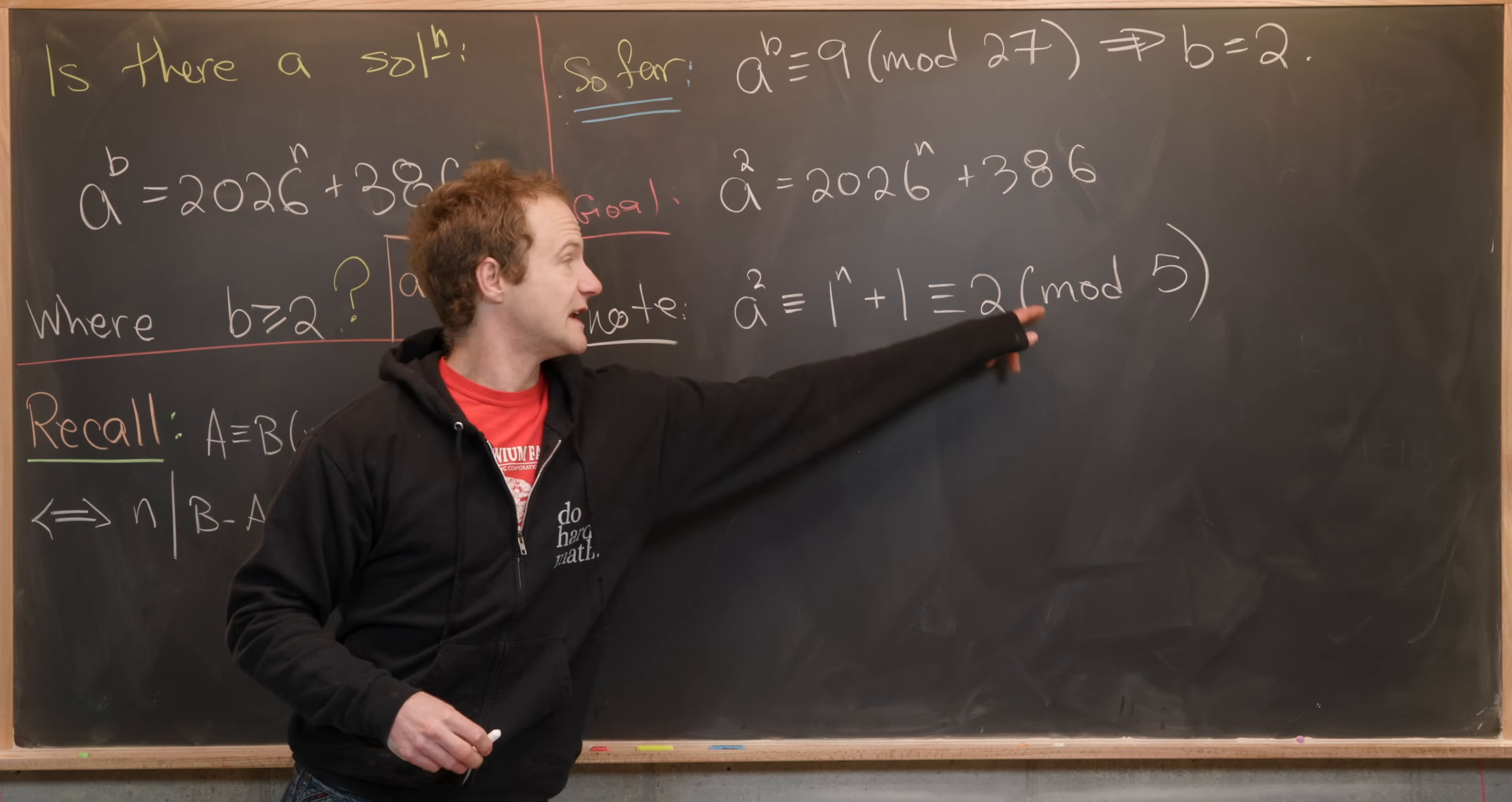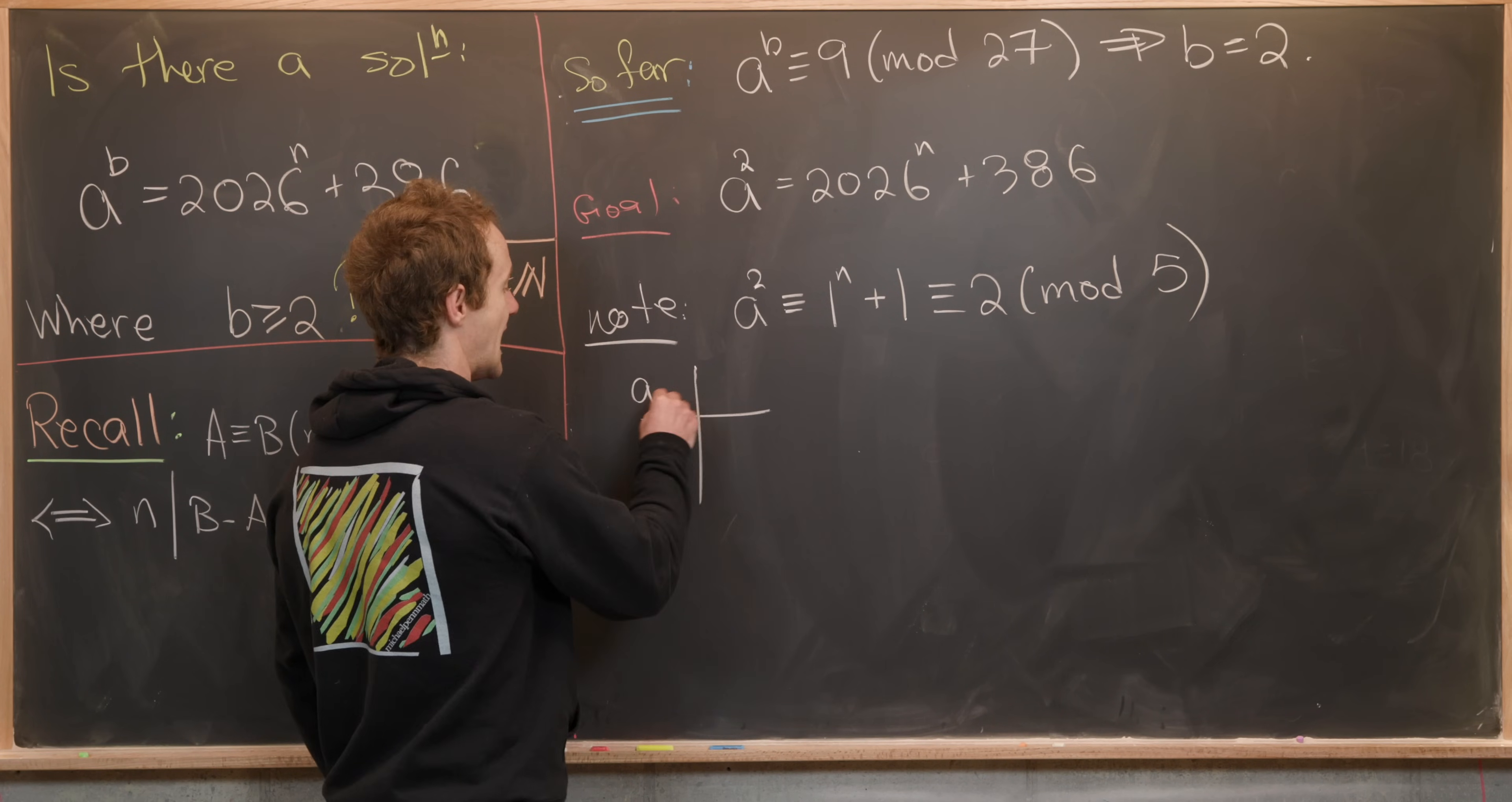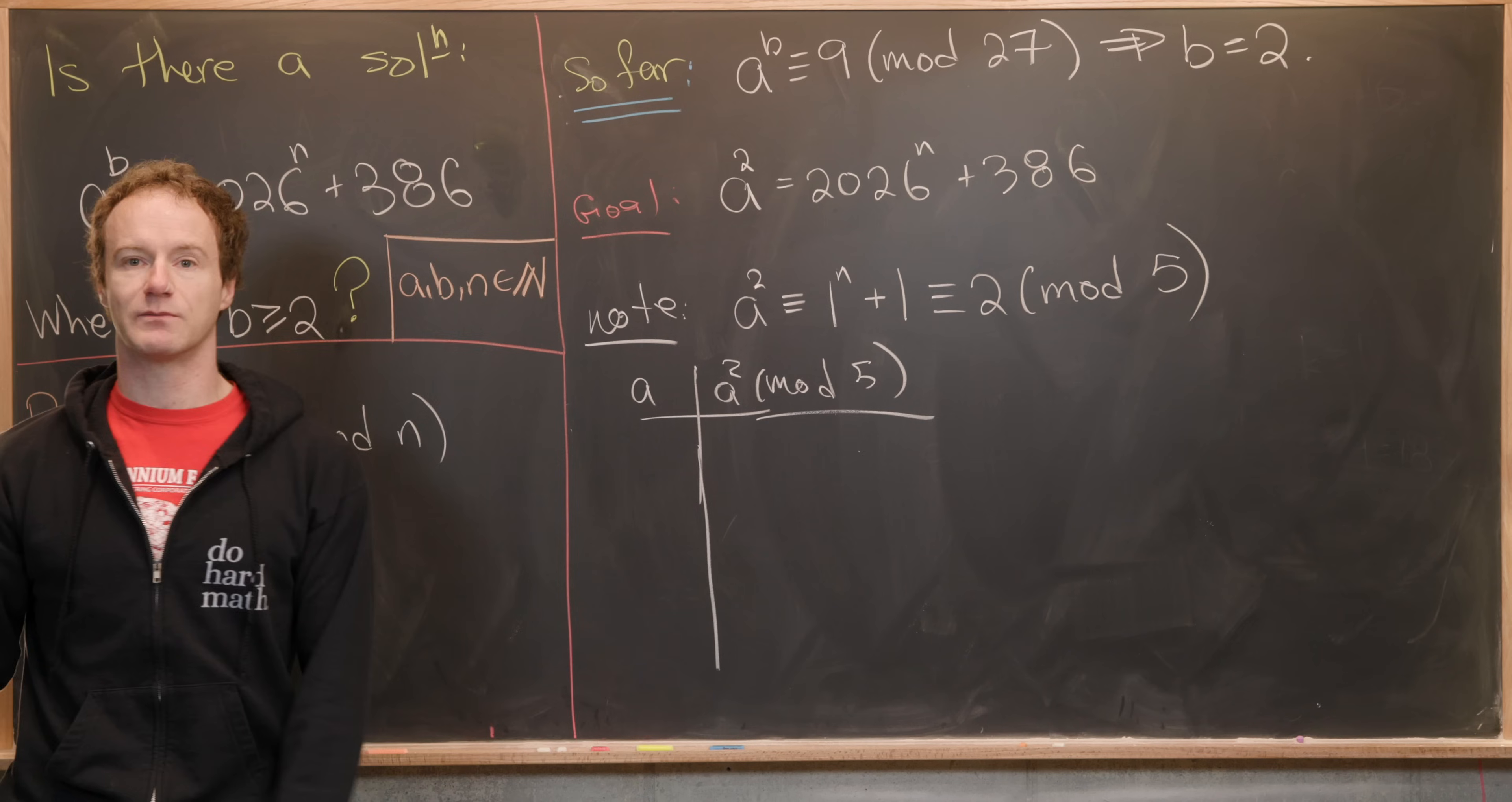So since we only need to really look at five numbers modulo 5, 0 through 4, we can just do this by making a chart. So let's do that. We'll look at a and then here is a^2 mod 5 and see that we never end up achieving the number 2. So like I said we need to plug in 0, 1, 2, 3, 4.